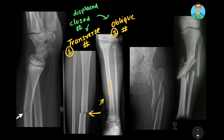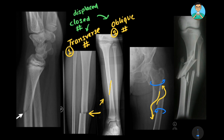Now the third type — can you see the fracture line? One fracture line goes this way and another goes this way, showing a spiral twisting pattern. The force applied was counterclockwise on one part and clockwise on the other, causing a spiral break in the bone. This is known as a spiral fracture. In this case the fracture is displaced, though there may also be non-displaced spiral fractures.